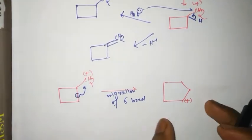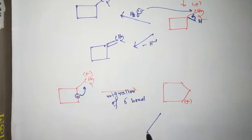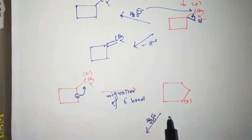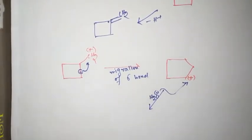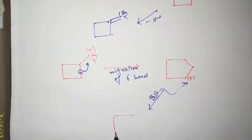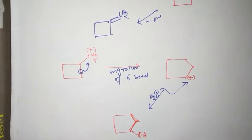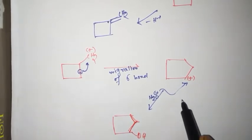For this 4-member ring carbocation, there are two possibilities. One is if water molecule is present here, then it attacks this carbocation and this product is formed, that is alcohol.